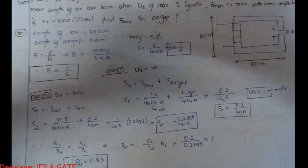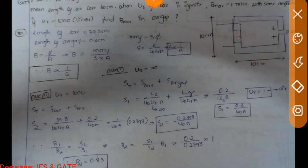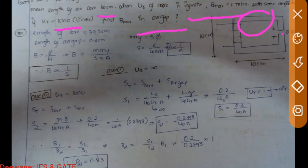Now here is the GATE 2019 question. Read it carefully: a magnetic circuit has a uniform cross-sectional area and an air gap of 0.2 cm. The mean length of the core is 40 cm. When μᵣ of the core is infinity, B_max is 1 Tesla. With the same ampere-turns, when μᵣ is 1000, what is B_max? If μᵣ is not infinity, reluctance increases, and when reluctance increases B_max decreases.